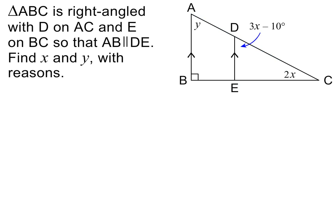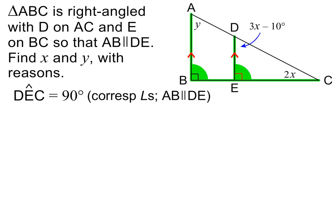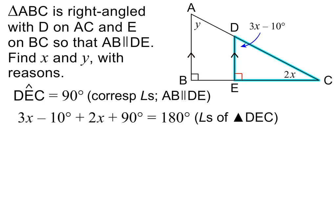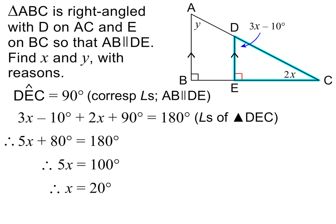Here is the next question. Please pause to read it. We begin with the parallel lines and the letter F. This means that angle DEC equals 90 degrees, because we have corresponding angles and AB is parallel to DE. We can now use triangle DEC and the fact that the angles of a triangle add up to 180 degrees. To solve the equation, we begin by collecting like terms on the left. We then subtract 80 degrees from both sides, and then divide both sides by 5. x is therefore equal to 20 degrees.